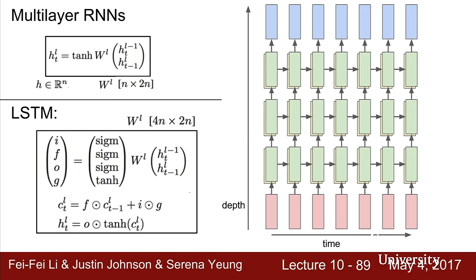So far we've talked about a single RNN layer with one hidden state. Another common approach is multi-layer recurrent neural networks. In a three-layer RNN, the input produces a sequence of hidden states from the first RNN layer, which then serves as input to a second RNN layer, and so on. Just as deeper models tend to perform better in other contexts, deeper RNNs also work better for many problems. Typically two, three, or four layer RNNs are used — you generally don't see super deep RNN models.